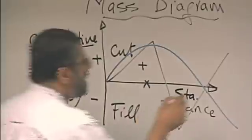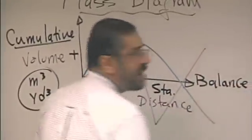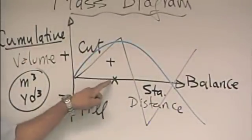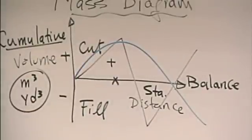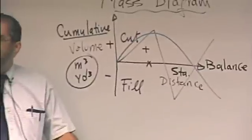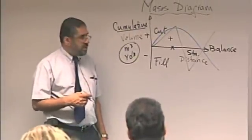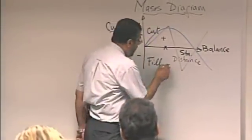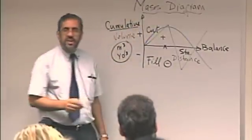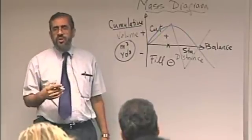Balance line. If I ended here, that means that cut and fill are equal and the job is balanced. So there is no excess material and there is no imported borrow to be obtained from outside. If I ended along the negative side here, which is the fill side, means that I need to get some soil from outside for my job.